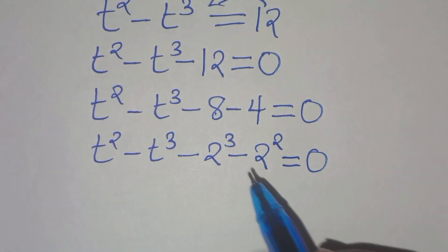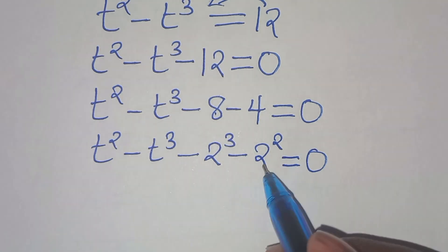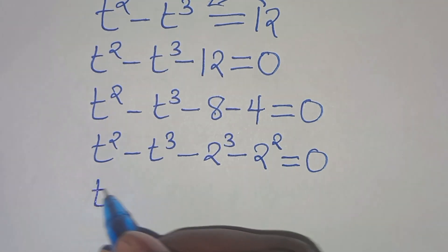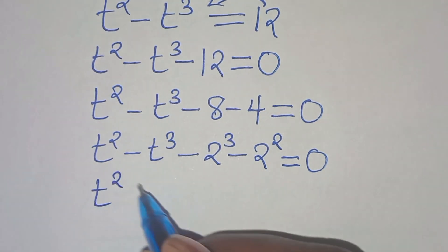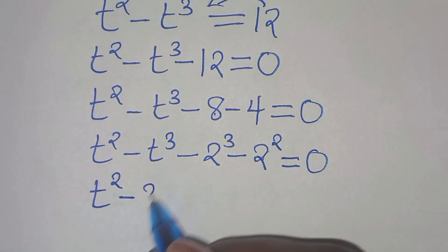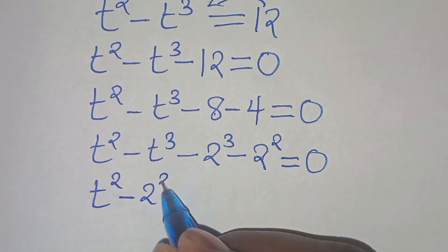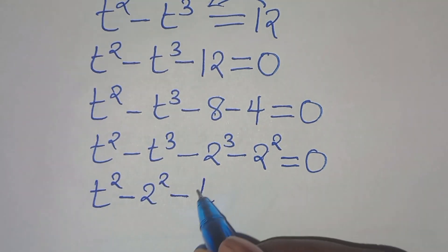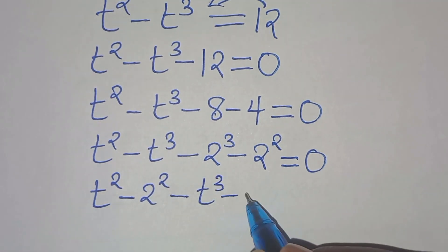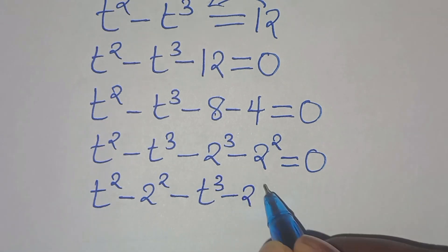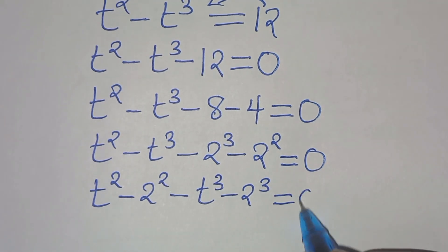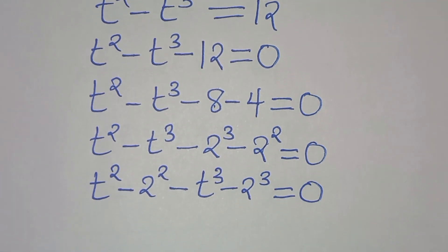Now we have t to the power of 2 here and 2 to the power of 2, so we write t to the power of 2 minus 2 to the power of 2, subtract t to the power of 3 minus 2 to the power of 3, and this equals 0.